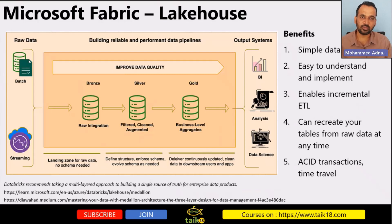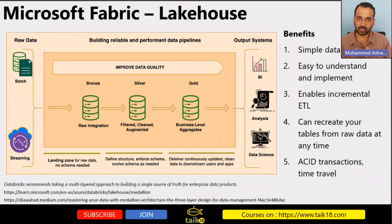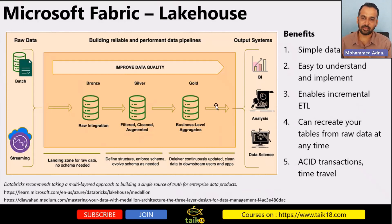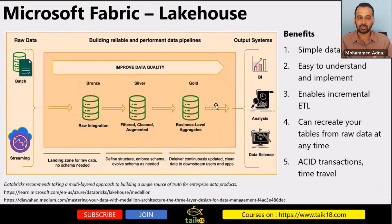So what are the benefits of using this architecture? Basically, it's a simple data model — easy to understand and implement. It enables incremental ETL and we can recreate tables from the raw source without going back to the main source. It also applies ACID transactions because we are moving from bronze to silver to gold, ensuring that each transaction is completed before moving on. The final gold layer can be used for business reporting purposes.